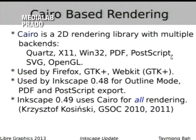Let me talk about Cairo for a second. Cairo is a 2D rendering library with multiple backends: Quartz, X11, Win32, PDF, PostScript, even SVG. There are OpenGL backends being developed. It's been used by Firefox and the GTK+ WebKit version. In Inkscape 0.48, it was used for outline mode and for PDF and PostScript export. In Inkscape 0.49, it uses Cairo for all rendering — most of the work was done over two summers by a Google Summer of Code student.